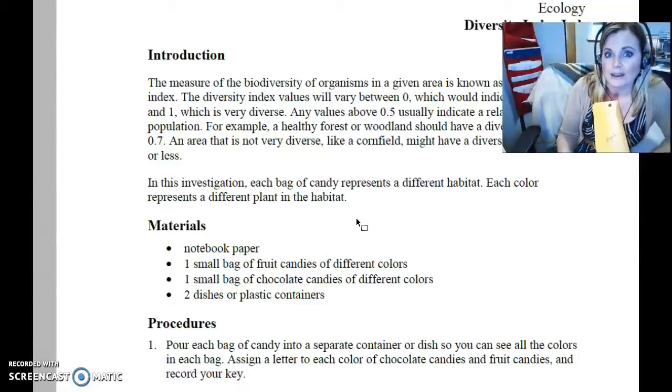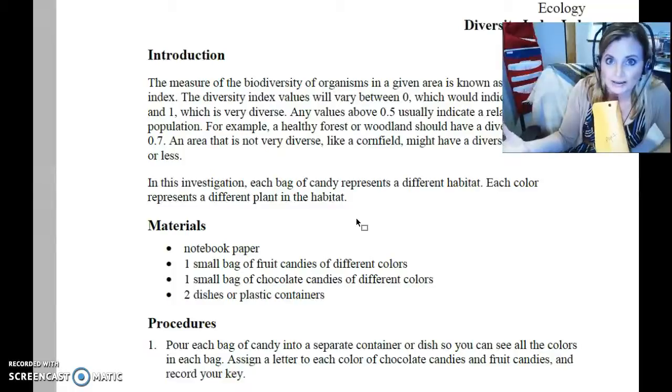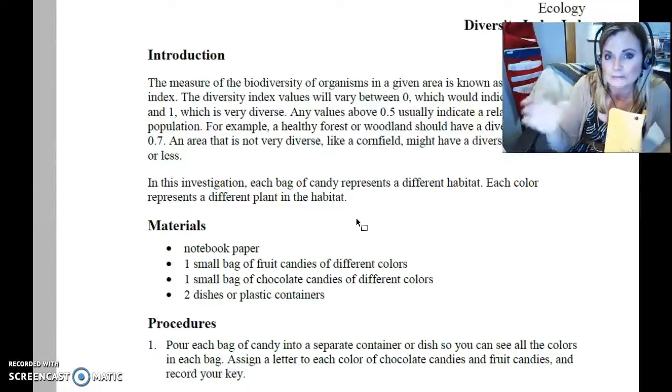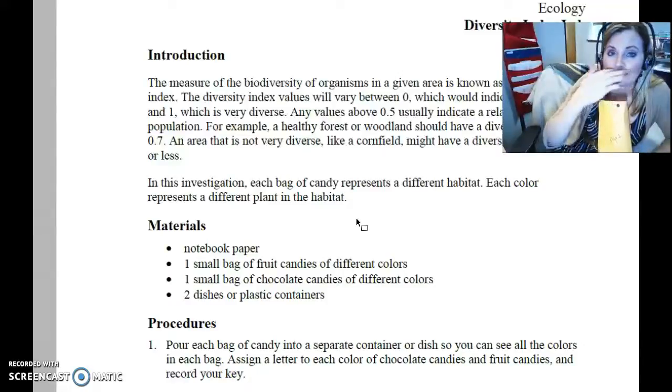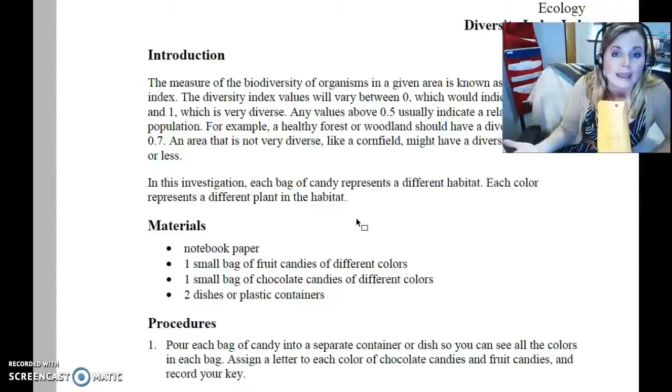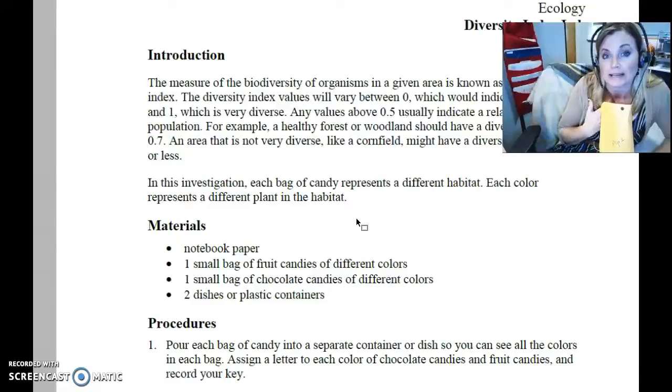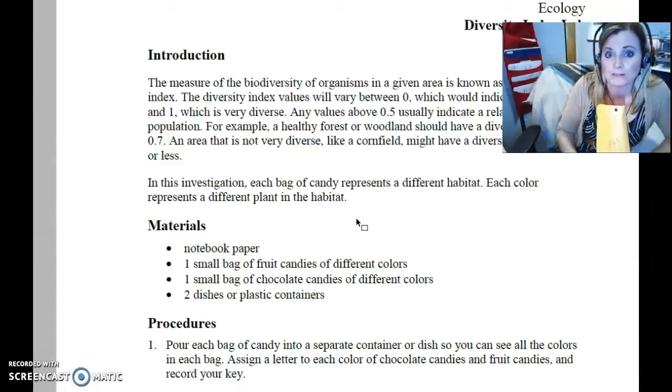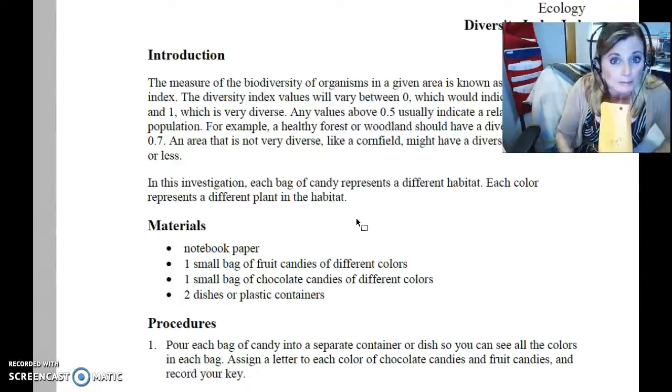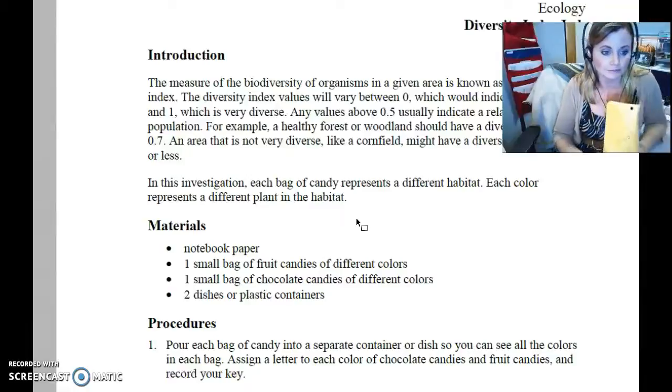You also want to make sure you have a fairly small number of types of objects in there. So you don't want to have like 30 colored crayons and only one of each because that's not going to help you out. If you had picked five colors of crayons and you have 10 of each color, that'll work fine. So just keep the number of the variety fairly manageable, somewhere between maybe four and ten, and make sure you have roughly the same number of objects in each bag. I would aim to have maybe a good 20 to 30 objects at the minimum.